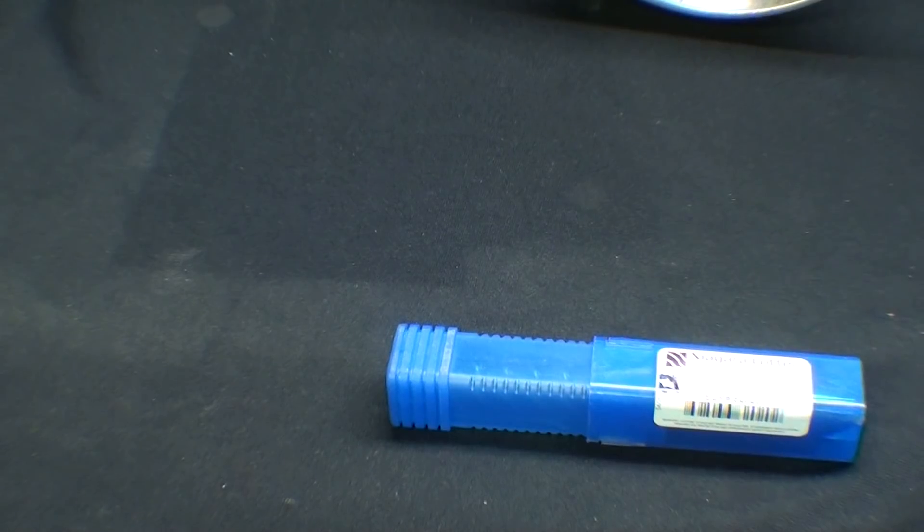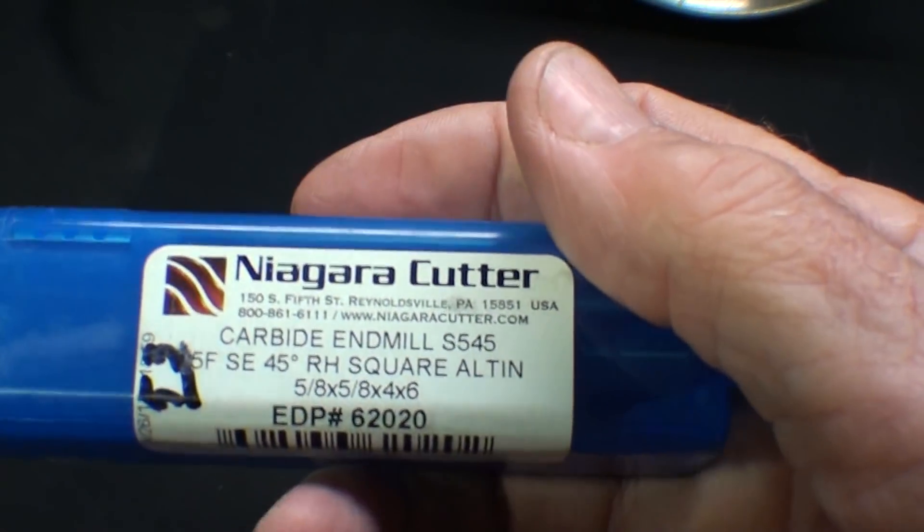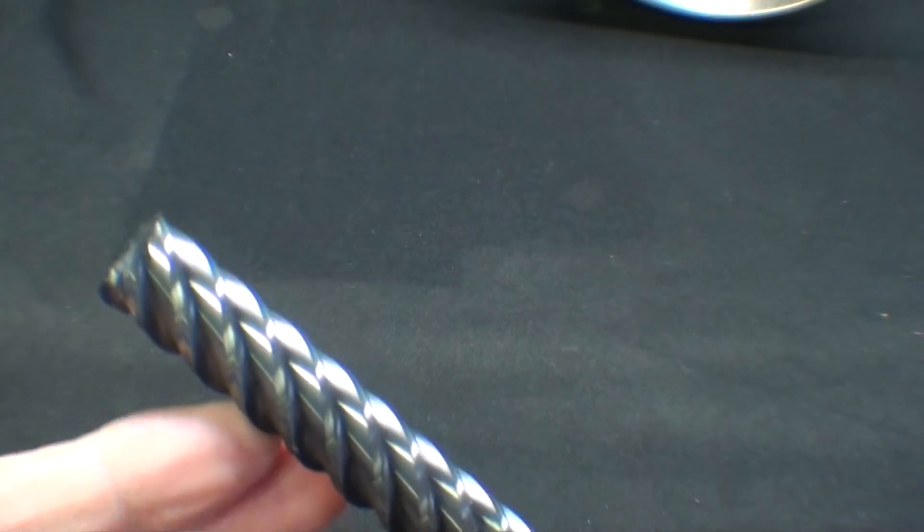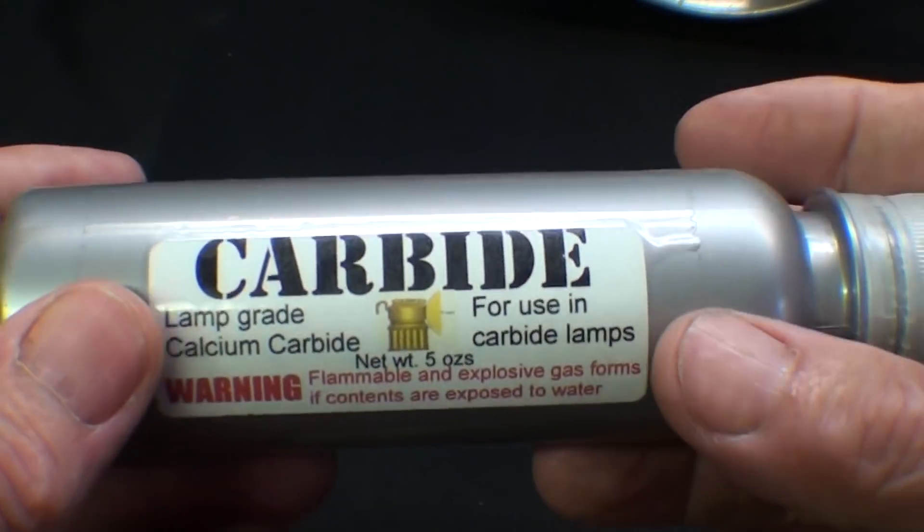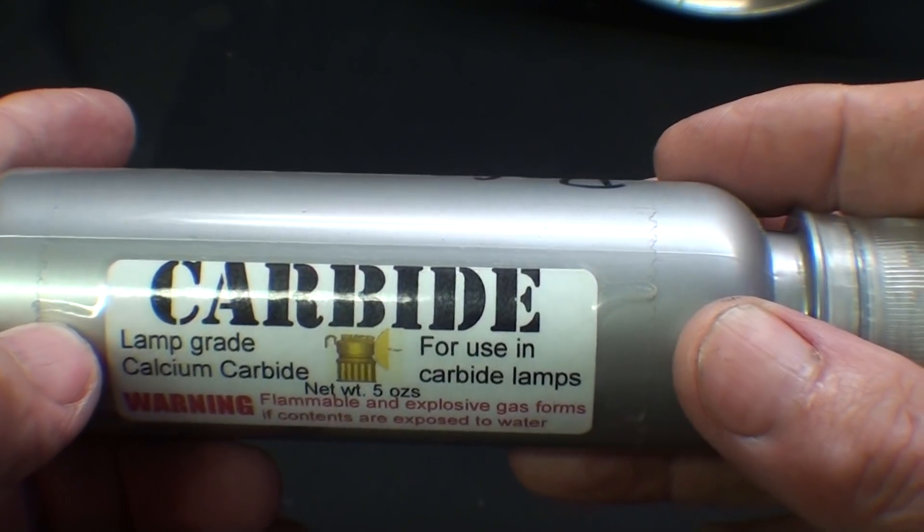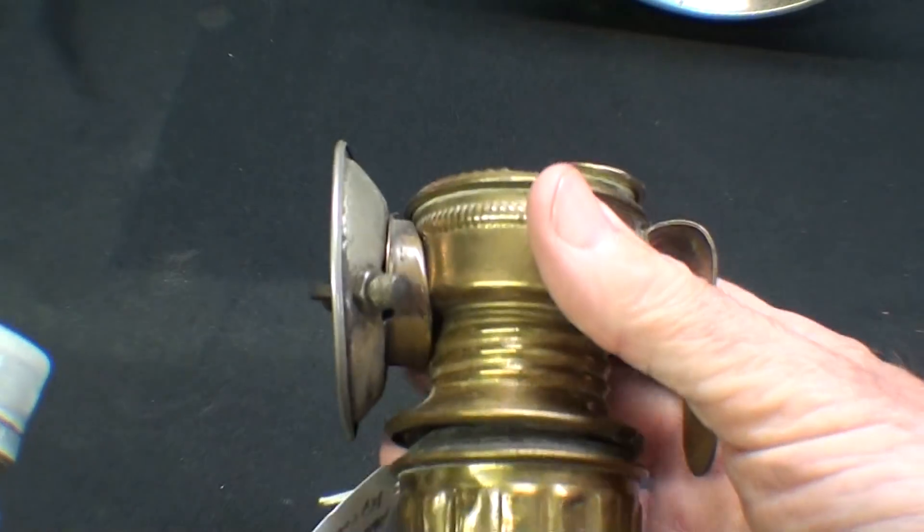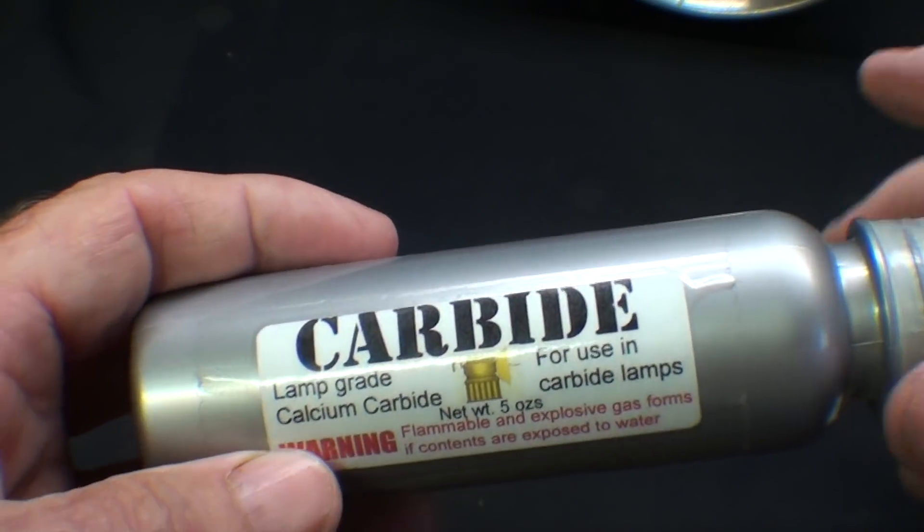I think sometimes we use the word carbide incorrectly. This is a tungsten carbide cutter. That's tungsten carbide, not to be confused with the abrasive silicon carbide, which is usually black. But what we're specifically talking about for this video is calcium carbide. As boys, we always called it simply carbide, and this is for use in carbide lamps.